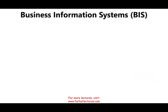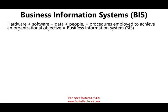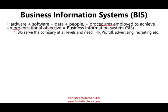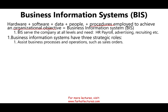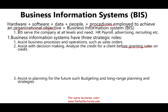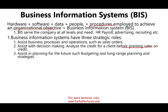If we take those five basic components — hardware, software, data, people — plus procedures to achieve organizational objectives, we call this a business information system, or BIS. BIS serves all levels of a company: HR, payroll, advertising, recruiting, sales. BIS has three strategic functions: it assists business processes like creating a sales order, it assists with decision making such as aging receivables, and it assists in planning for the future like budgeting and strategic planning.